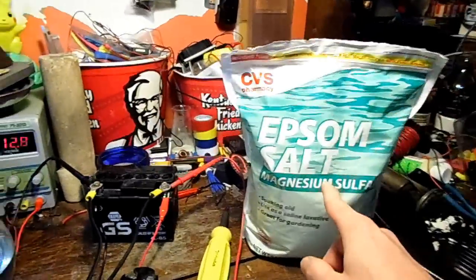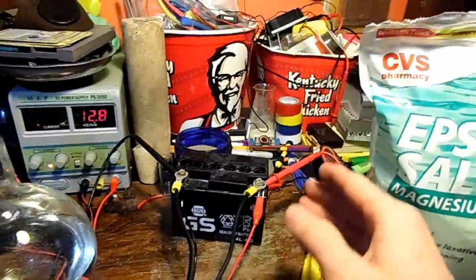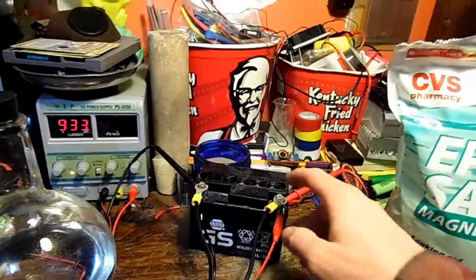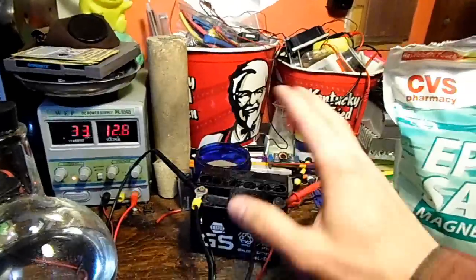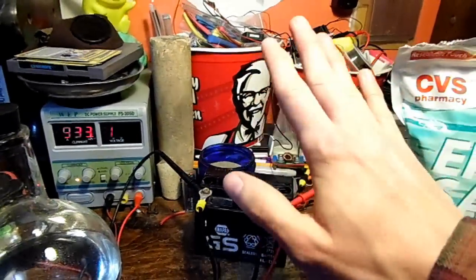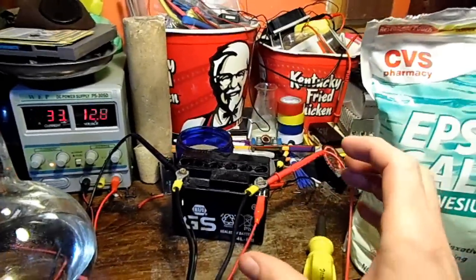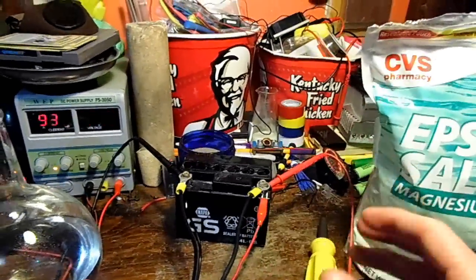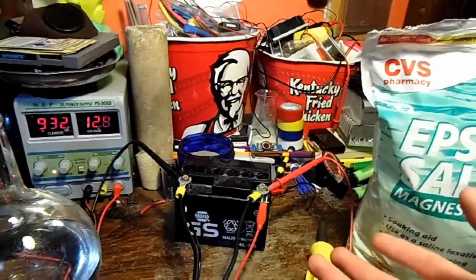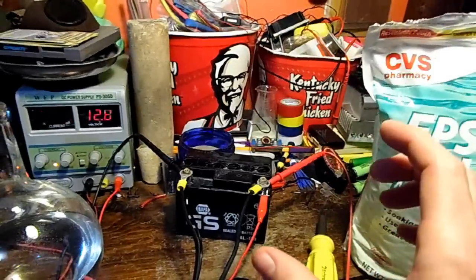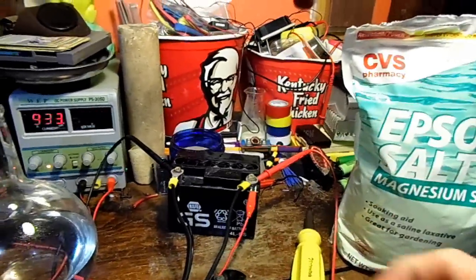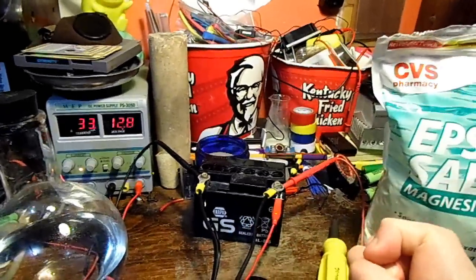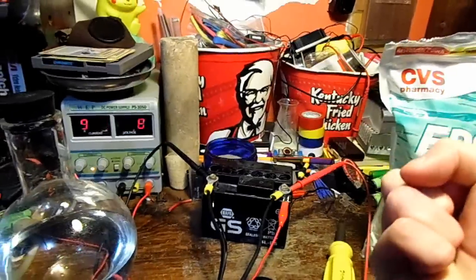In conclusion, Epsom salt added to a lead acid battery increases the electrolyte's reactivity. Let's say this battery has 75% of the surface area of the plates sulfated and then the other 25% of the surface area is not sulfated. All of your capacity and reaction is coming from that remaining part of the plates that's still usable. This increases the reactivity which kicks that into overdrive.